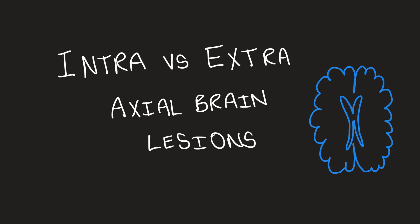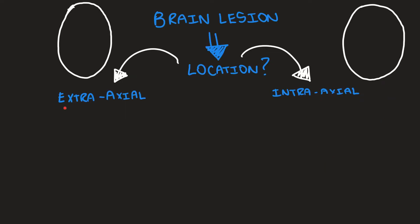This video is a really short and simple video to tell the difference between an intra- and extra-axial brain lesion. The reason why this is important is it helps to narrow down your diagnosis. Extra-axial lesions originate from the covering around the brain, whereas intra-axial lesions occur actually in the brain, so they are intra-parenchymal.